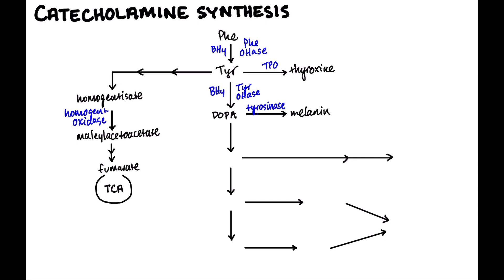DOPA then gets converted by an enzyme called DOPA decarboxylase — which uses B6 (pyridoxine) as a cofactor — and that becomes dopamine. Dopamine then gets converted to norepinephrine, which is the first of our neurotransmitters that work on the sympathetic nervous system, through an enzyme called dopamine beta-hydroxylase, which uses vitamin C as a cofactor. Finally, norepinephrine is converted by an enzyme called PNMT into epinephrine, the final catecholamine neurotransmitter.